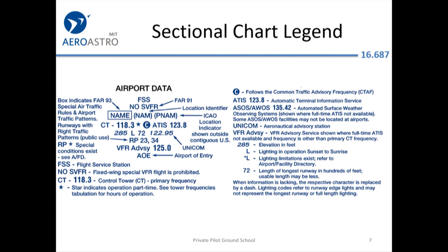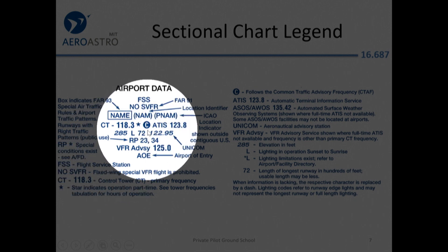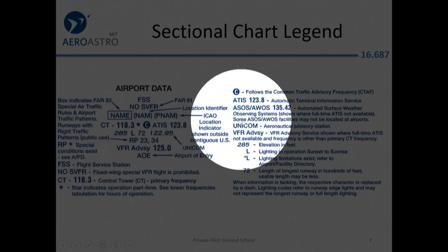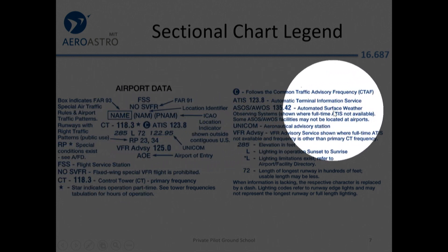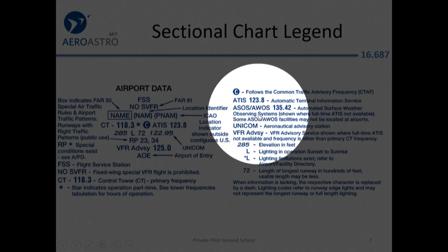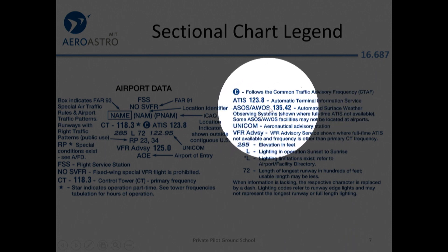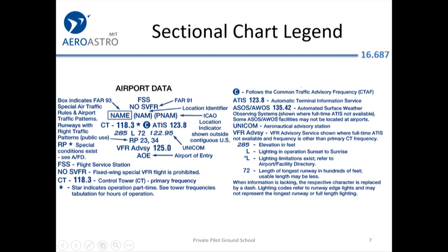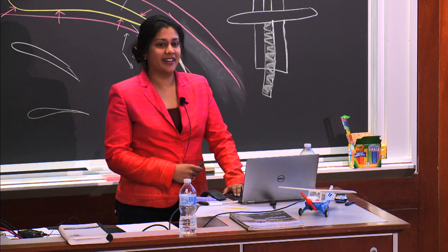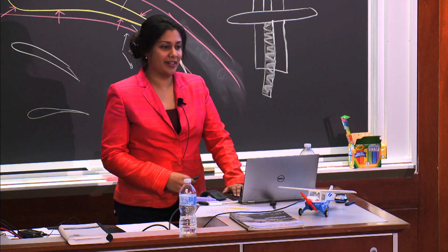There's a lot of other data on here. For example, it tells you some automated surface weather, or ASOS, 135.42 — so you know that you can contact that frequency if you want to get the automated weather service. A lot of this data is listed there, but we won't go through everything because it is nicely defined in the legend.